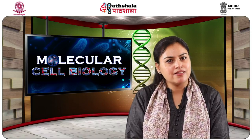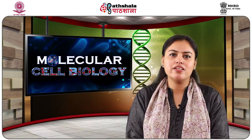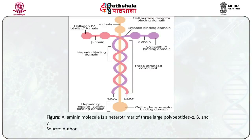The cross-shaped laminin consists of a globular domain and a long arm in which the three chains are covalently joined by several disulfide bonds. The functional domains on the ends of the alpha chain bind to organ-specific cell surface receptors, whereas those at the ends of two arms of the cross are specific for type IV collagen. The cross arms also contain laminin-laminin binding sites, enabling laminin molecules to bind each other and form large aggregates. Laminin also contains binding sites for heparin, heparan sulfate and nidogen.